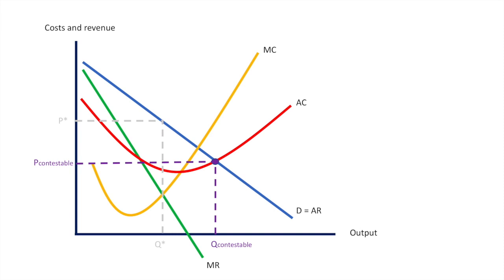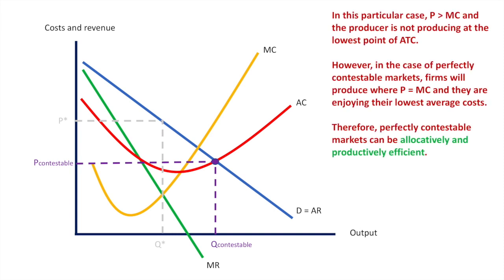While this price is lower than P star, it is still not equal to marginal cost, and therefore allocative efficiency is not achieved. This firm is also not achieving productive efficiency as it is not operating at the lowest point of its average cost curve.